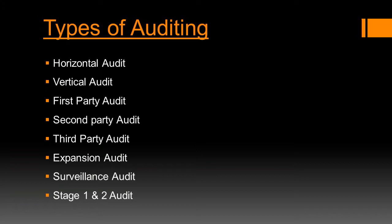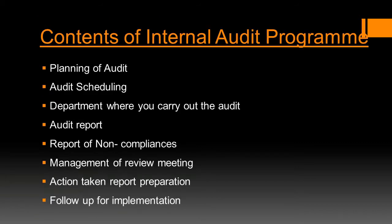Moving to the types of auditing: the first type is horizontal audit, conducted process-wise or department-wise. Vertical audit is conducted as per NABH standard-wise. First party audit is the internal audit; second party is conducted by the outside service provider; third party is conducted by the accreditation board. Expansion audit is conducted by certification bodies when the organization makes changes in the existing scope, and surveillance is only done after the organization is granted the certificate.